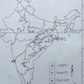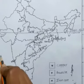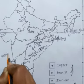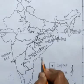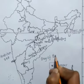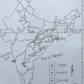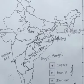Now let's mark the water bodies. The western side is covered by the Arabian Sea, the eastern side by the Bay of Bengal, and the southern tip faces the Indian Ocean.